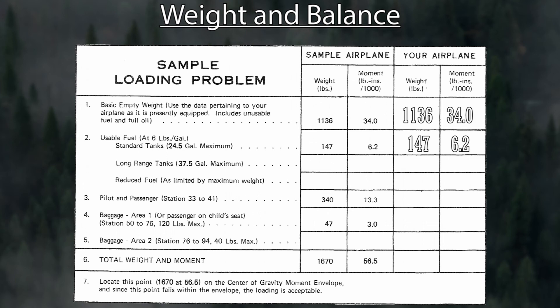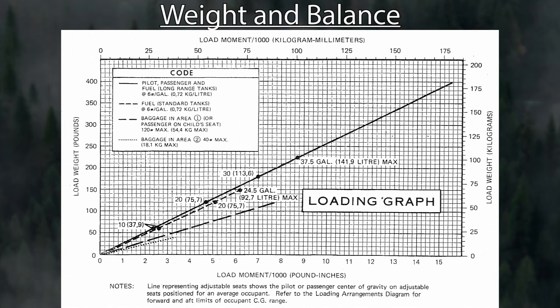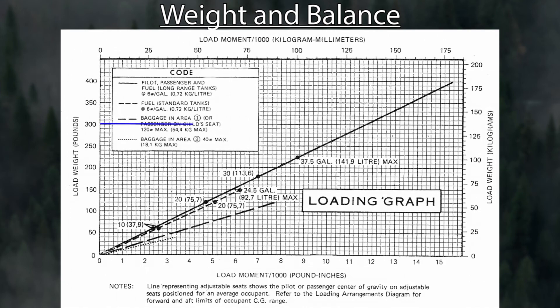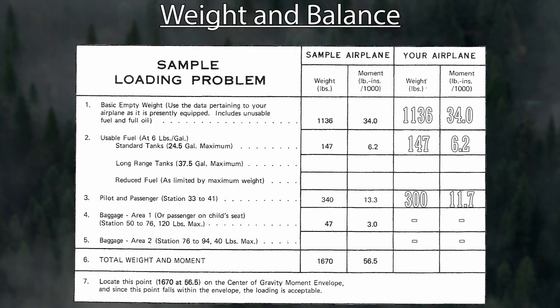For the pilot and passenger, we'll put in 300 pounds. Going back to the chart, the pilot and passenger is a solid line. Take 300 pounds, follow it across to the solid line, then go straight down — that's right at about 11.7. We won't have any baggage, so that's zero for both baggage areas. Adding everything up: 15.83 for the weight and 51.9 for the moment.